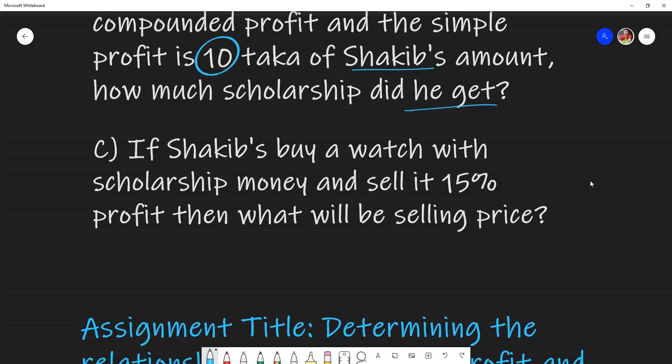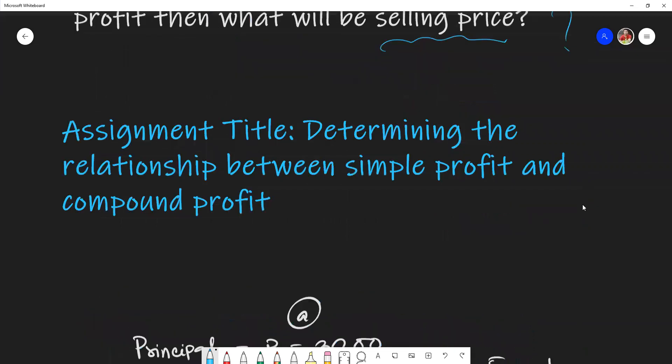Question C: If Sakib buys a watch with scholarship money and sells it at 15% profit, then what will be the selling price? The assignment title is determining the relationship between simple profit and compound profit.